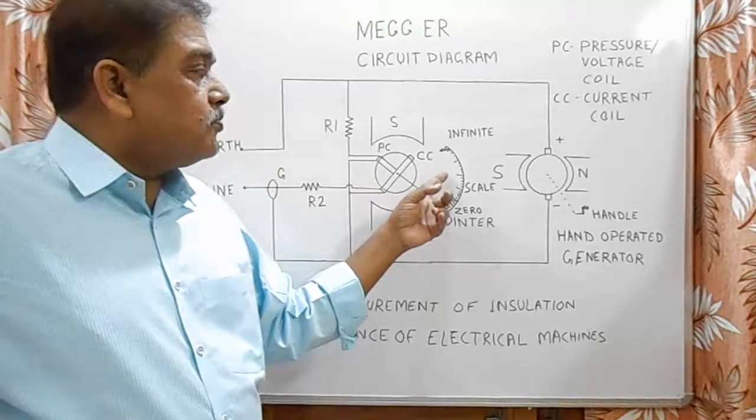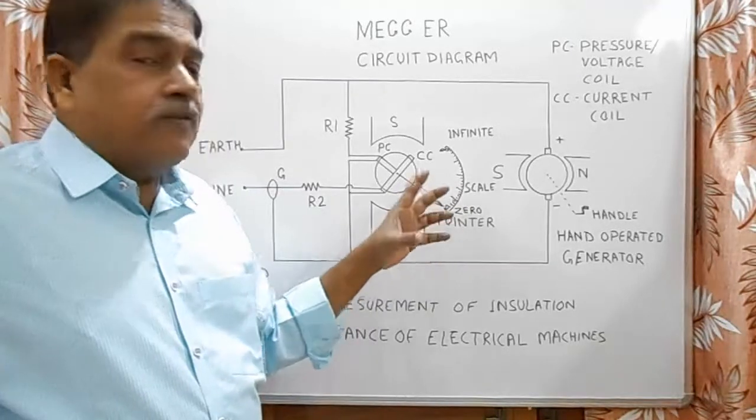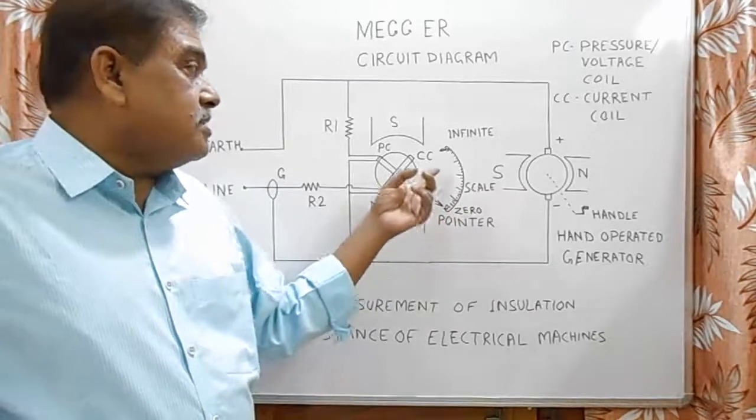For example, 10 mega ohms, 5 mega ohms, and for short circuit case zero. So for very large resistance it shows infinity.